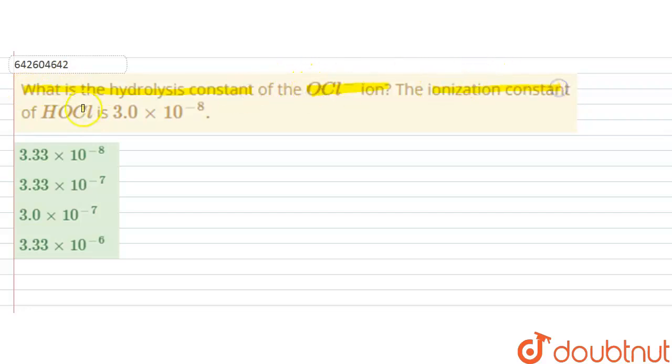The ionization constant of HOCl is 3 into 10 raised to the power minus 8. So in this question we have to find out the hydrolysis constant of the OCl negative ion and ionization constant of the acid HOCl is given.